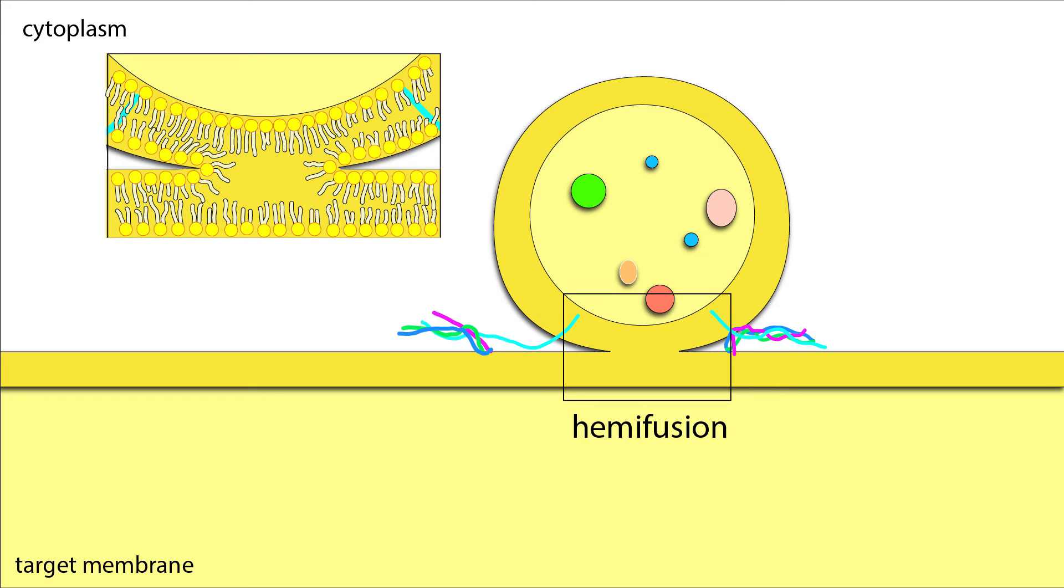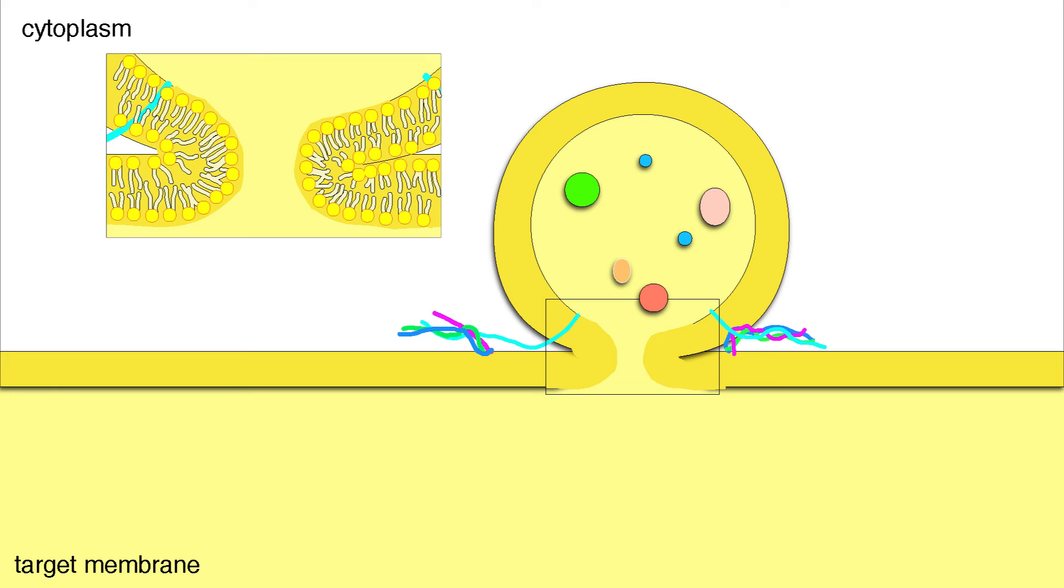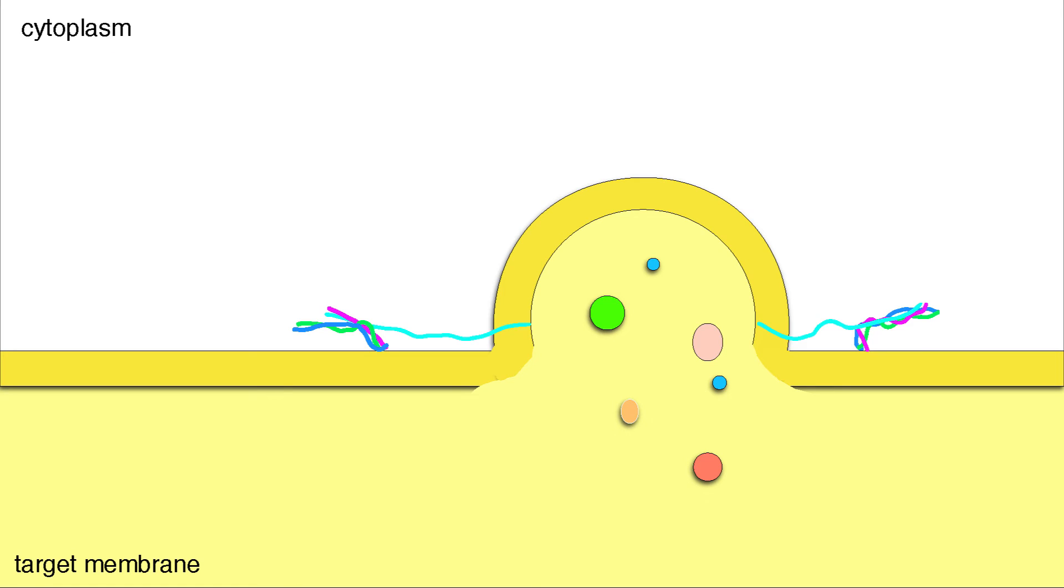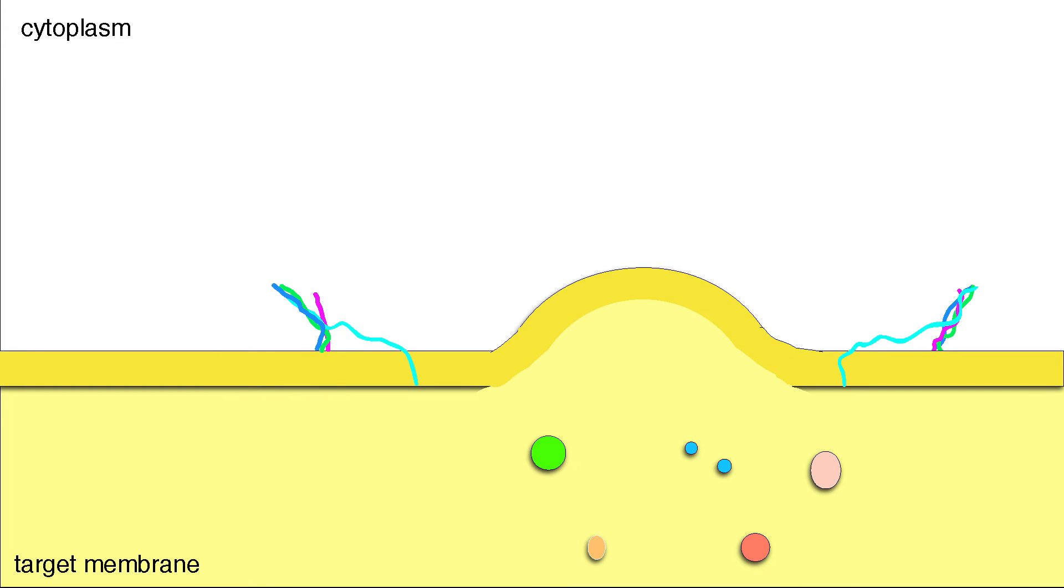Spontaneous flipping is the rate-limiting step of vesicle fusion because it forms an unstable, hemifused membrane. Because hemifusion is highly unstable, it quickly rearranges to form a fully-fused membrane. Once the vesicle has fused with its target membrane, the cargo is released into the luminal side and membrane-bound proteins in the vesicle become part of the target membrane.